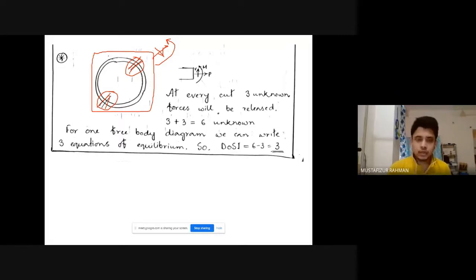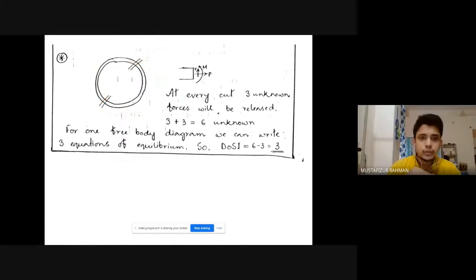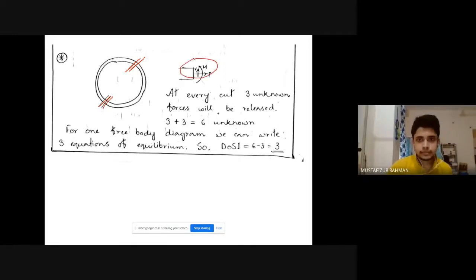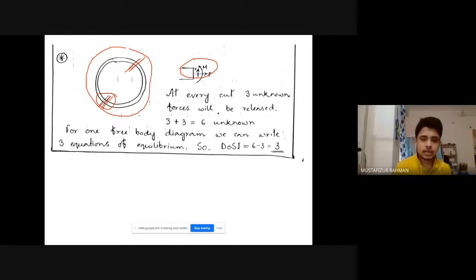We can write three equations of equilibrium: summation of forces in x equal to zero, summation of forces in y equal to zero, and summation of moments about a point equal to zero. For the ring we have six unknown forces and three equations of equilibrium. Therefore the degree of static indeterminacy becomes six minus three equal to three. So if we have a ring-type structure, the degree of static indeterminacy will always be three.